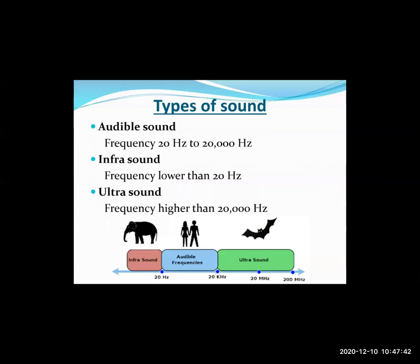The first type is audible sound. Audible sound waves have a frequency range from 20 hertz to 20,000 hertz. Hertz (Hz) is the unit for measuring frequency — one hertz means one oscillation per second. So 20 Hz means an object vibrating 20 times per second, and 20,000 Hz means 20,000 oscillations per second. These are sounds processed by our brains that we can hear and identify.